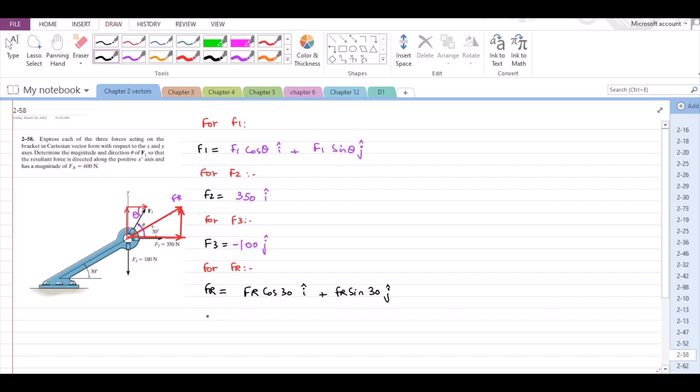And we know that FR is equal to 600 N. So FR in terms of Cartesian vector form is 519.62 i plus 300 j.